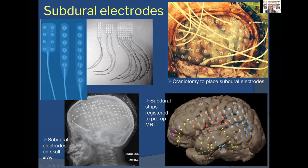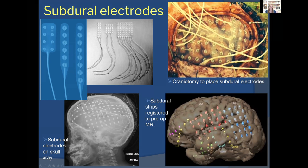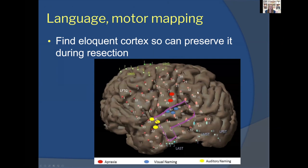Subdural electrodes are placed below the dura on the brain surface via a craniotomy. The dura is opened and grids are laid directly on the brain; they come in various shapes and sizes — thin strips can be placed subtemporally or interhemispherically, and larger grids can cover broad areas. Post-operatively, electrode locations are registered to the MRI so you can see exactly where each electrode sits. This is particularly helpful for left temporal lobe seizures located near the speech area.